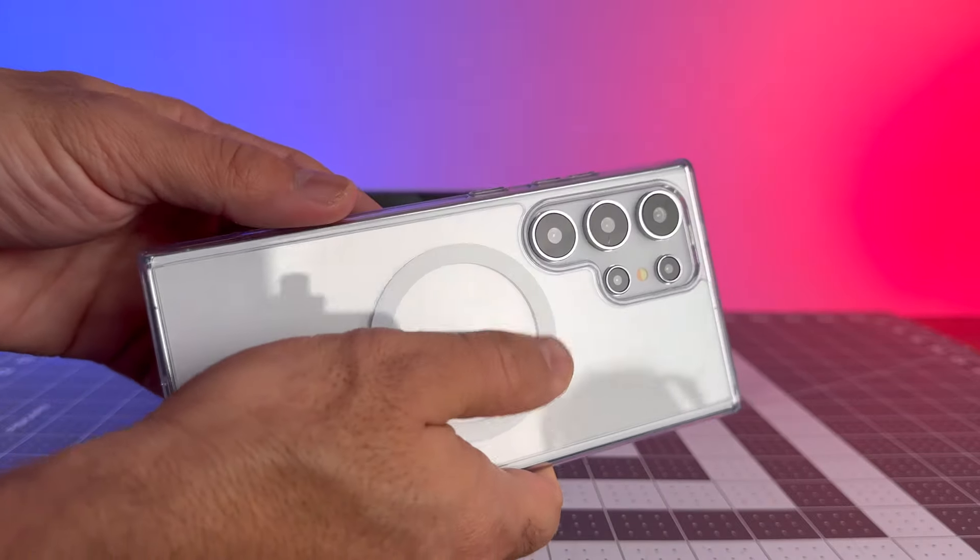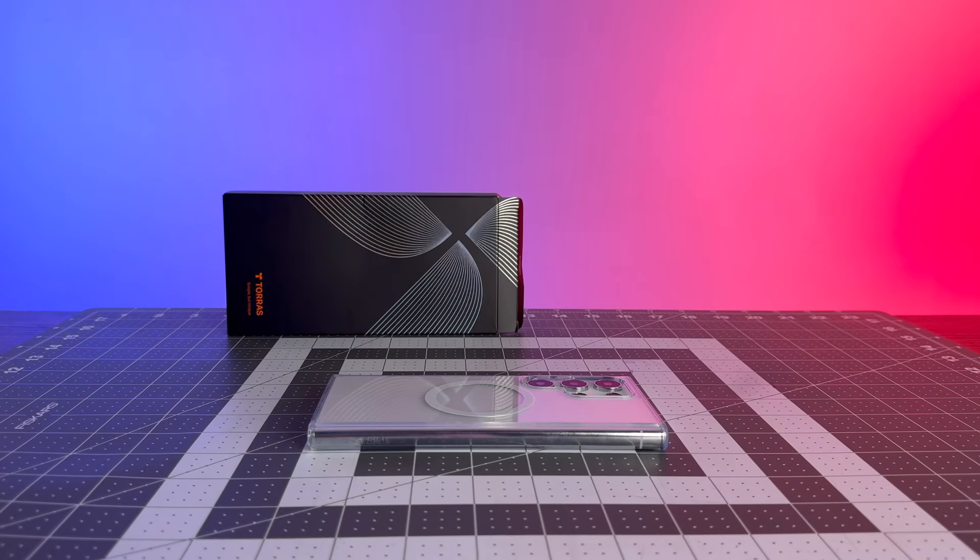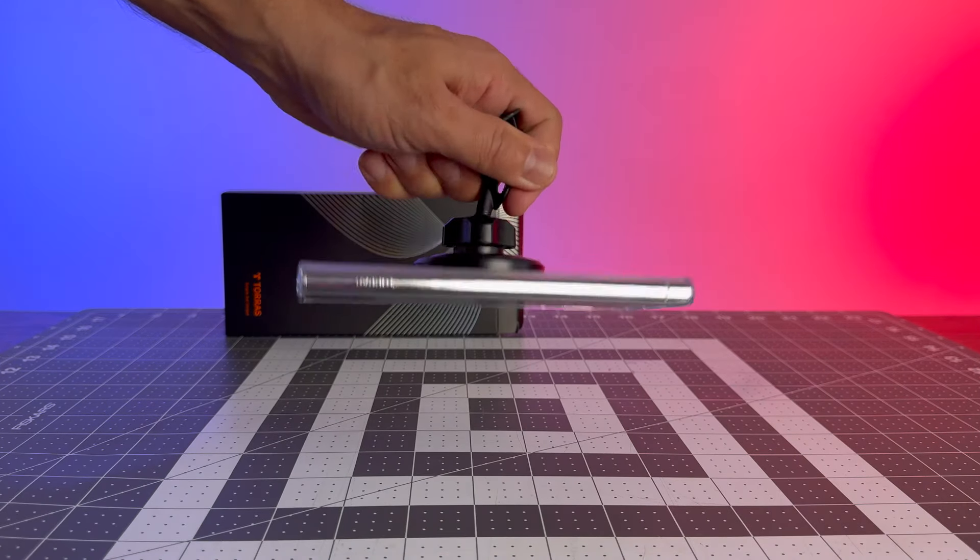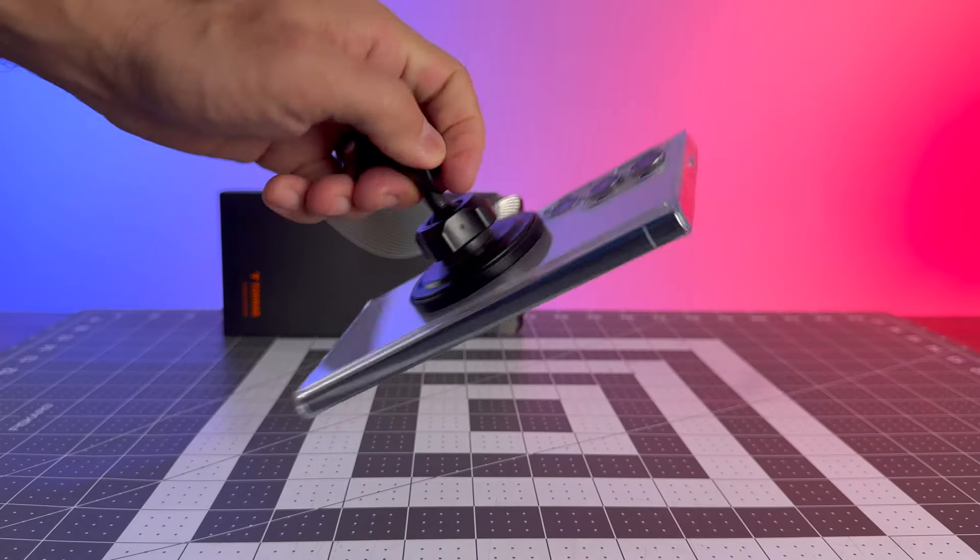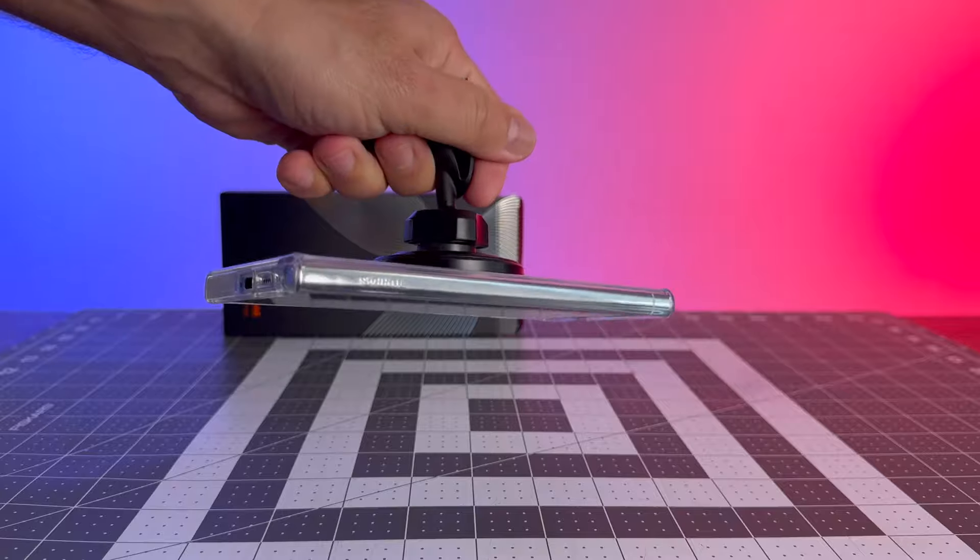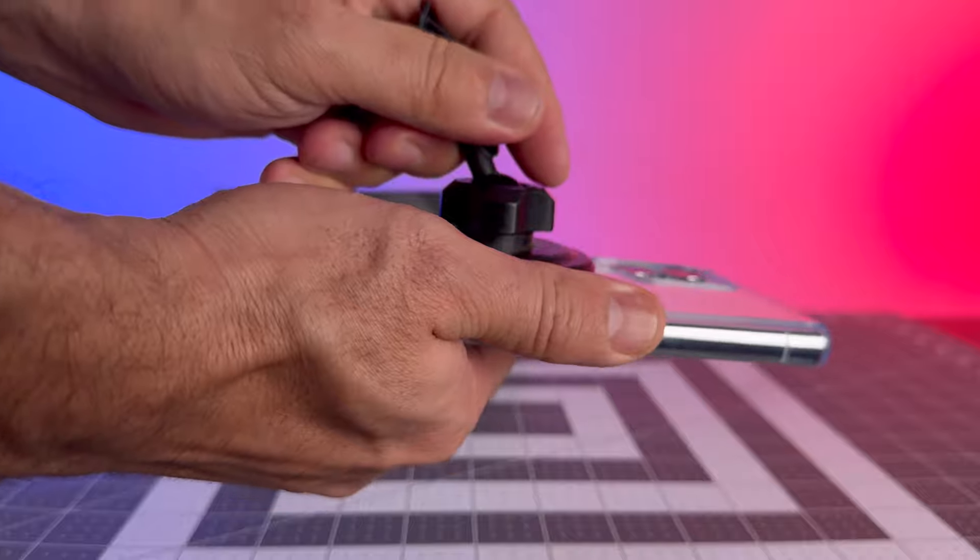Also, the Taurus case features N52 neodymium magnets and MegaMag technology, delivering a robust 21N strong magnetic grip. Say hello to a magical attach experience with your phone and flawless compatibility with MagSafe accessories. Whether you're snapping it onto a car holder or using it on bumpy roads, your phone will stay securely in place.